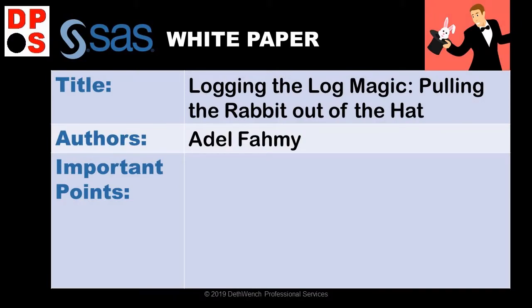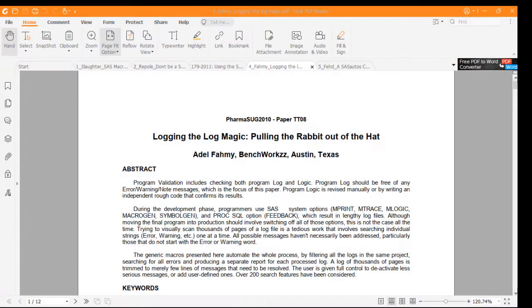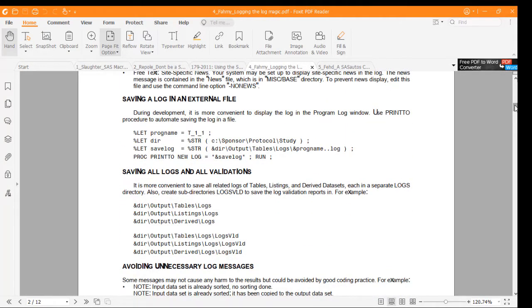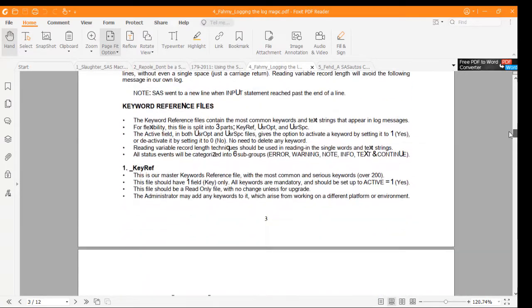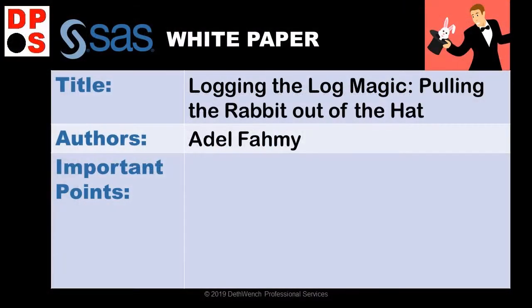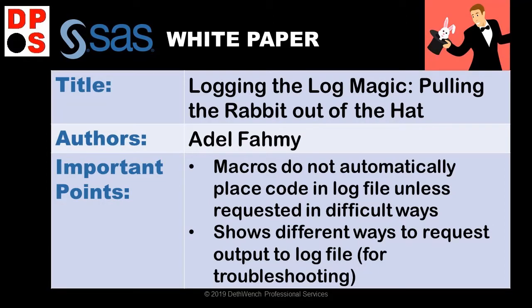The next one is called Logging the Log Magic: Pulling a Rabbit Out of the Hat by Adel Fahmy. What he is really talking about is using programming to make certain things show up in the SAS log to help you troubleshoot. He starts by talking about ways to manicure your log file and get it to print a certain way, then covers ways to get different things to print in the log, even providing examples of macros he uses for that purpose. This is relevant because when you run data steps you see output automatically in the log, but if you turn that data step into a macro, you won't see any of that — so you have to explicitly request certain things to print in the log for troubleshooting.